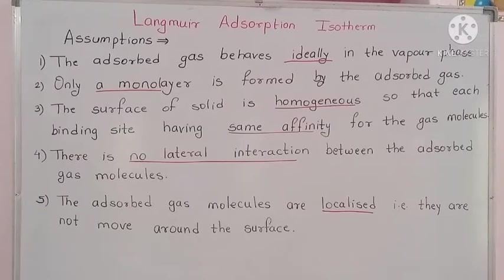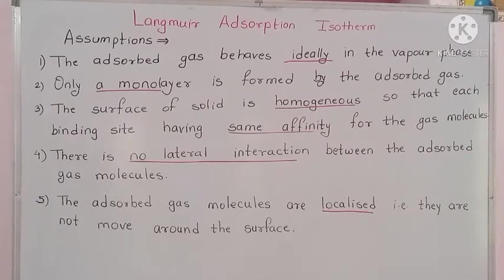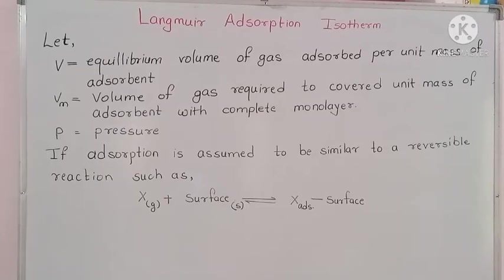These are the five total assumptions or considerations for Langmuir adsorption isotherm. Based on these five assumptions, he derived an expression used to calculate the amount of adsorbed gas molecules. Let V be the equilibrium volume of gas adsorbed per unit mass of adsorbent with complete monolayer, and P be the pressure.